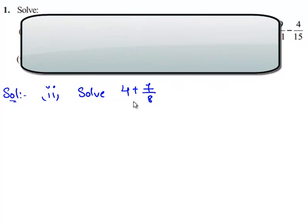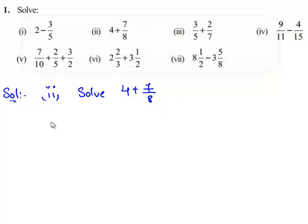For addition of any two fractions or a number and a fraction, we need to obtain a common denominator. Therefore, the given expression is written as 4 by 1 plus 7 by 8.